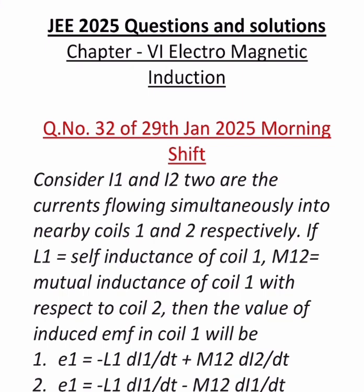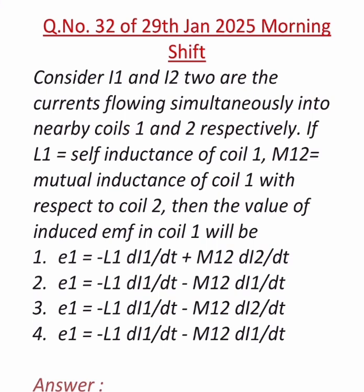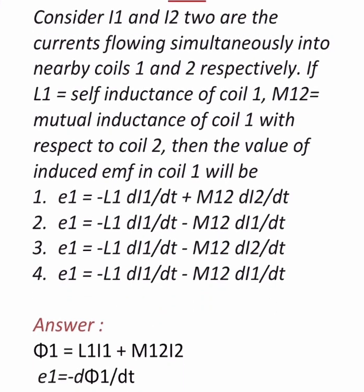Now the question goes like this. Consider I1 and I2 are the currents flowing simultaneously into nearby coils 1 and 2 respectively. If L1 equals self inductance of coil 1, M12 mutual inductance of coil 1 with respect to coil 2, then the value of induced EMF in coil 1 will be, and they have given four options.